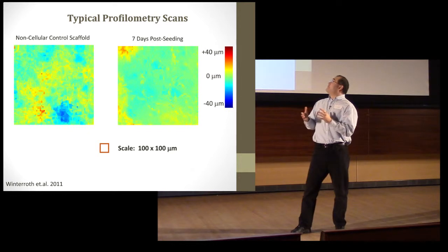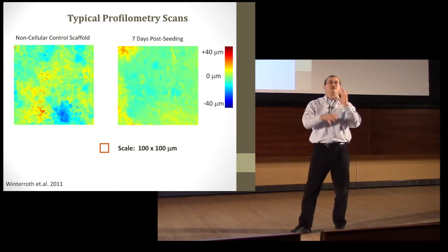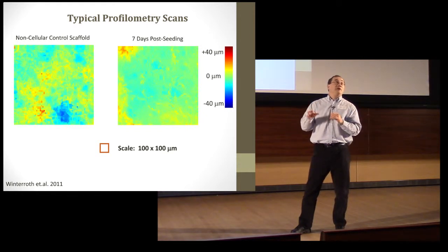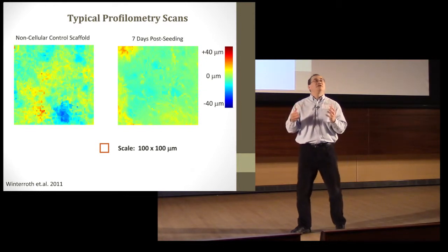Here we have a top-down view of the non-cellular control scaffold, which is nothing. You see high variations, whereas the more mature material is on the right side, and you can see that it's very uniform as a consequence of the homogeneity of the tissues.